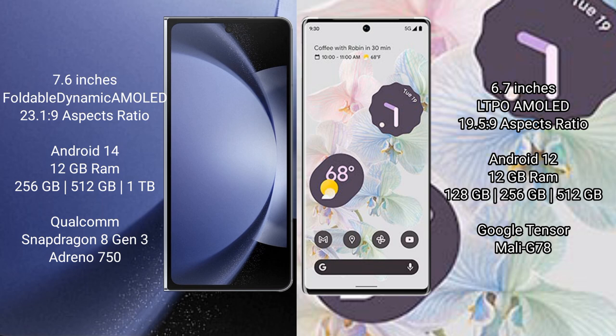The Google Pixel 6 Pro comes with 12GB RAM and 128GB, 256GB, or 512GB internal storage options. It is powered by the Google Tensor processor.